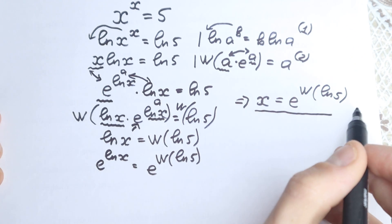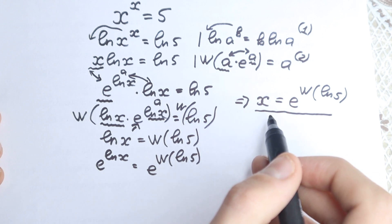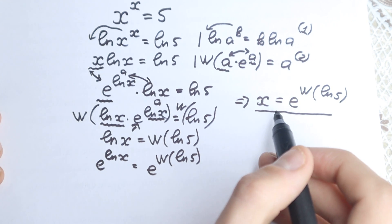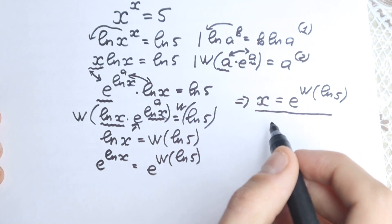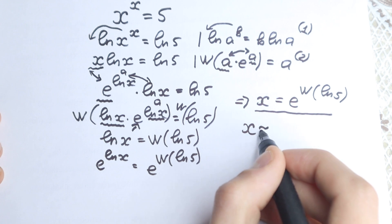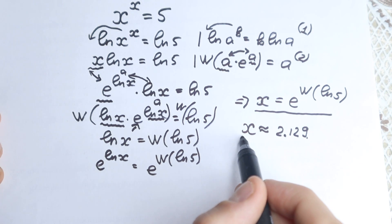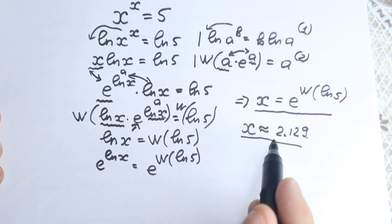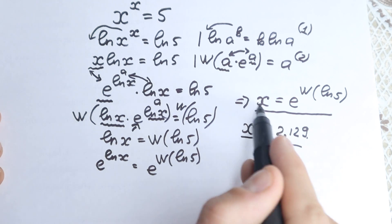This is your exam solution. If you have this question in your exam, this is the solution — x equals e to the power Lambert W of natural log 5. You may not be able to find the exact numerical value on your calculator during an exam, but this exact form is the correct final answer. If you do have a calculator, x is approximately equal to 2.129. It's not a clean integer like 2 or 3 — we have a decimal answer — but the exact form is correct.